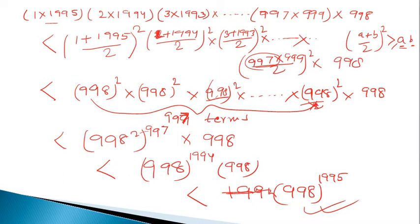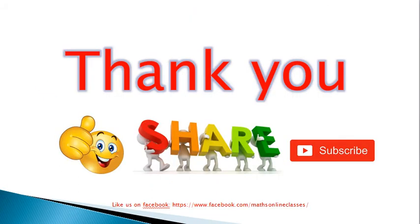So this is how we prove it. We identify the pattern in the question — pairing terms symmetrically and applying the AM-GM inequality — and tackle it accordingly. That's it for this video. If you like this video, please like, share, and subscribe to my channel.